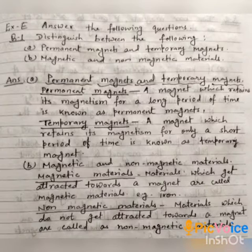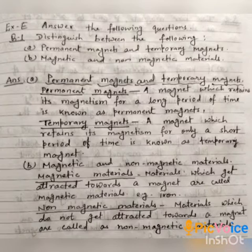Question number one: distinguish between the following — permanent magnet and temporary magnet. A magnet which retains its magnetism for a long period of time is known as a permanent magnet. A magnet which retains its magnetism for only a short period of time is known as a temporary magnet.